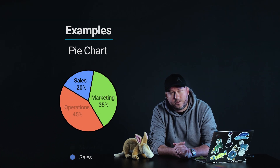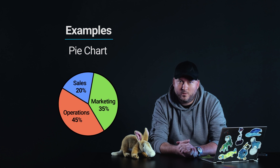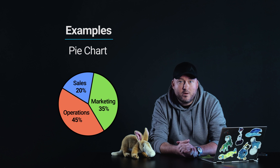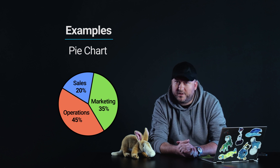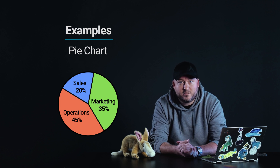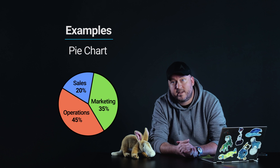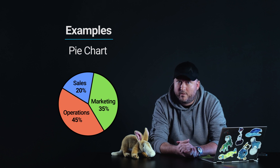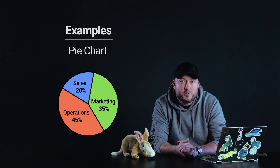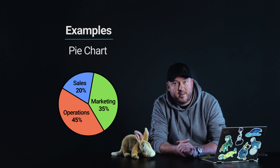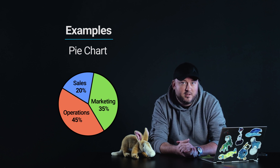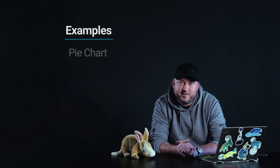Let's make some improvements to it. Now, each part of the pie chart is still colored differently but now contains the label and percentage text inside. Operations with 45% on a red background, marketing with 35% on a green background, and sales with 20% on a blue background. Color is used to visually distinguish different pieces of the pie chart, but if the color was not there, no information would be lost thanks to the labels and numbers inside.